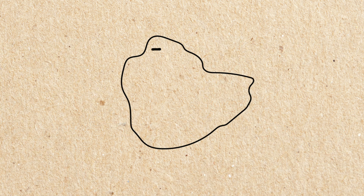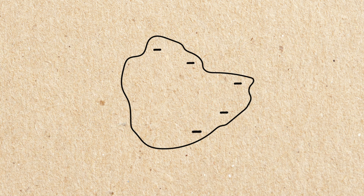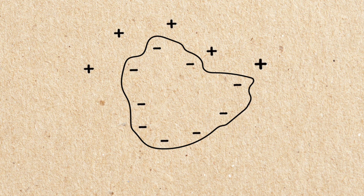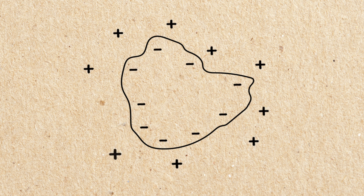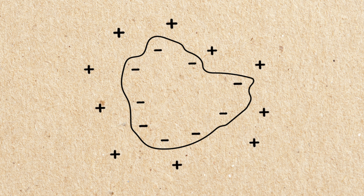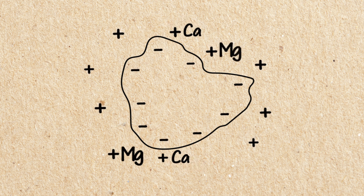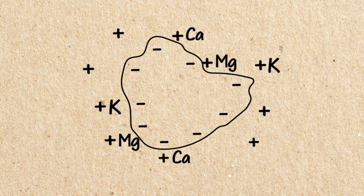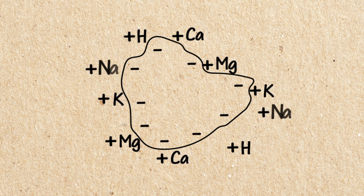Second is cation exchange capacity, or CEC. CEC is the number of positively charged ions a soil can hold. The higher a soil's CEC value, the higher its capacity to hold positively charged ions. The most common soil cations are calcium, magnesium, potassium, hydrogen, and sodium.